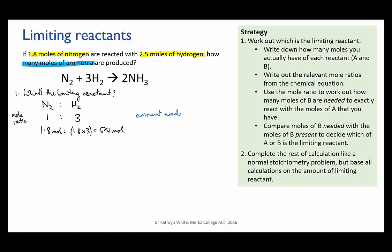What this tells us is that we need 5.4 moles of hydrogen to fully react with the 1.8 moles of nitrogen but we only have 2.5 moles of hydrogen so that's not enough to fully react with the nitrogen and that means that the hydrogen is going to run out first. Hence hydrogen is the limiting reactant here.